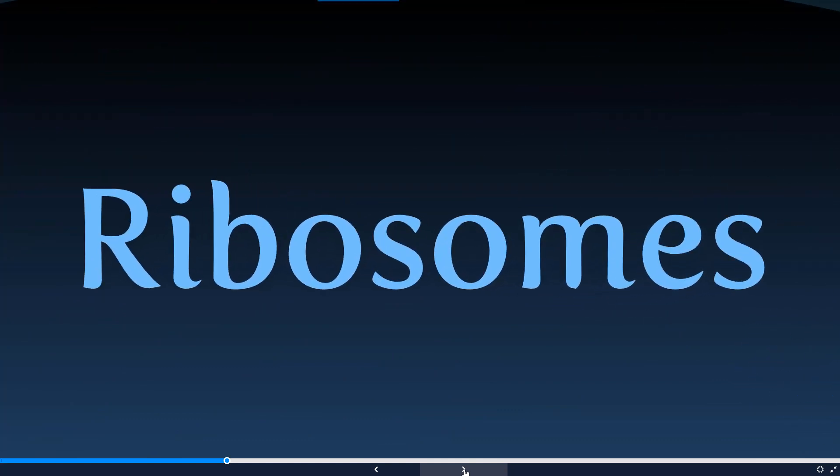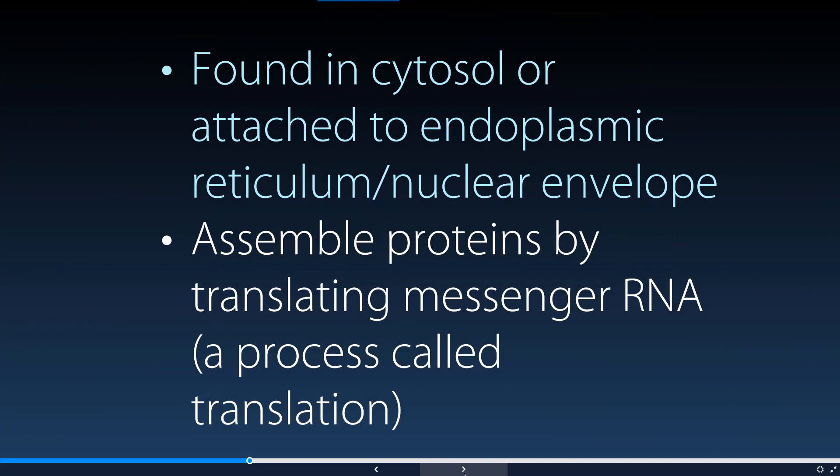Ribosomes are very important, yet small organelles. They are found in the cytosol or cytoplasm, or attached to the endoplasmic reticulum and the nuclear envelope. The role of the ribosome is to create proteins through a process called translation, which is based on another process called transcription, essentially controlled by RNA. They are the assembly house — the kitchen — where all these proteins are being made.